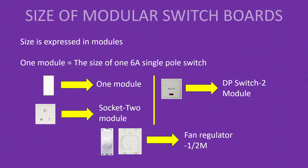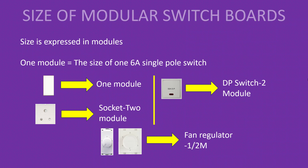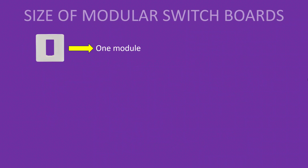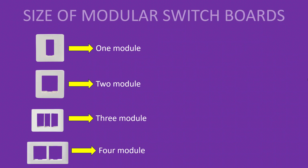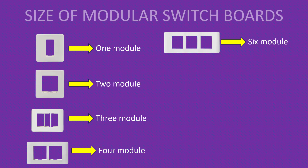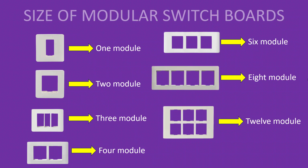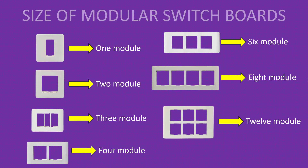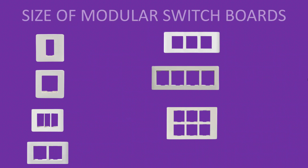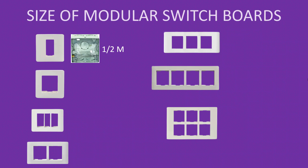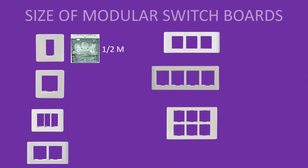Based on these sizes, we calculate the switchboard sizes. Cover plates are available in one module, two module, three module, four module, six module, eight module, and up to twelve module. Almost all manufacturers make cover plates in these configurations; some also make nine module cover plates but these are not available with most. Concealed boxes are also available in this same range, from one module up to eight module.